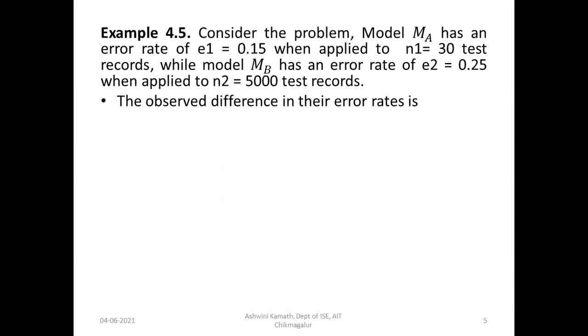The observed difference in error rates is D = |E1 - E2| = |0.15 - 0.25| = 0.1. We take the absolute value, ignoring the negative sign, so D = 0.1.